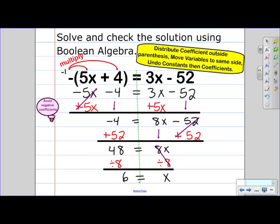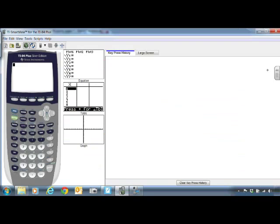So I am done solving my equation. I do need to check my solution using Boolean algebra. So let's go to our calculator. So in our calculator, we need to store our solution, which is 6. And we press the store key and we're storing that as x. And now we hit enter. And then our calculator is confirming.